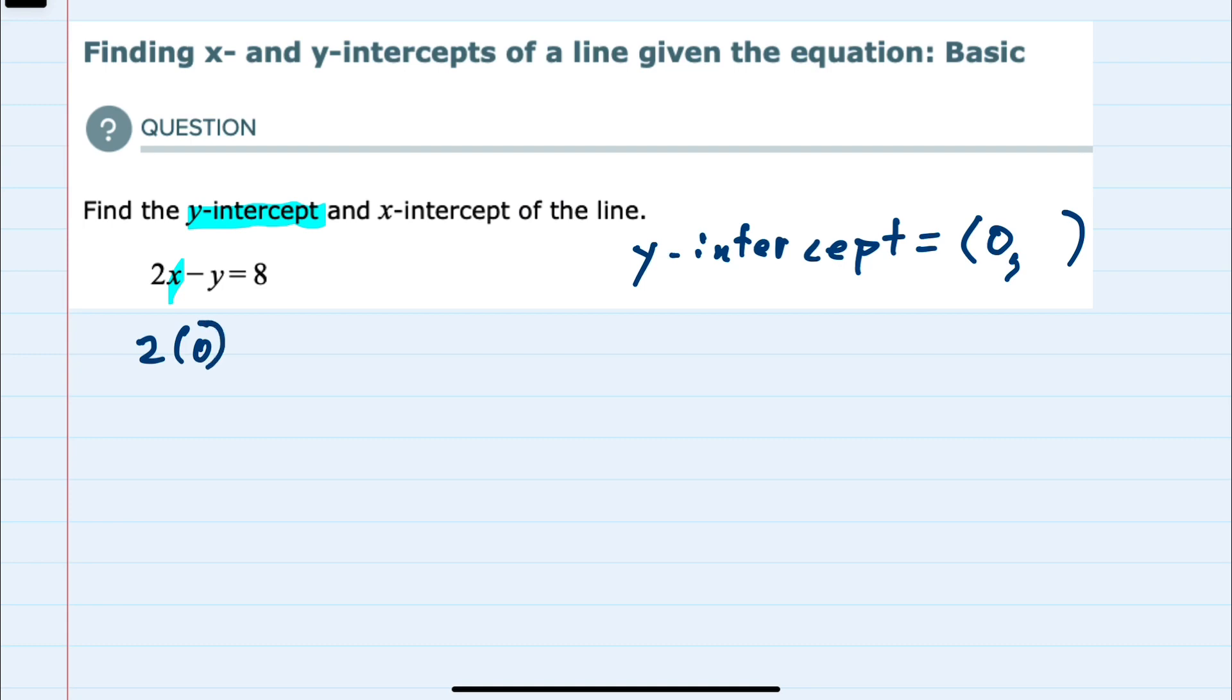So 2 times 0 minus y equals 8, and solve for y. 2 times 0 is 0 minus y equals 8, so a minus y equals 8, y equals negative 8. We have found our y-intercept is 0, negative 8.